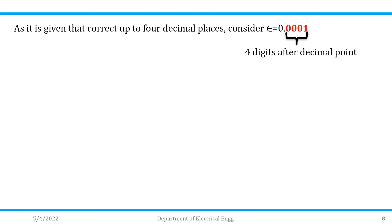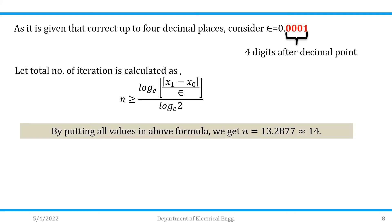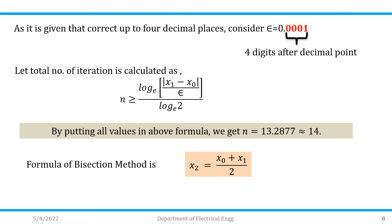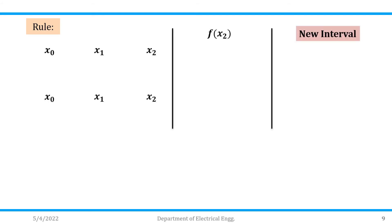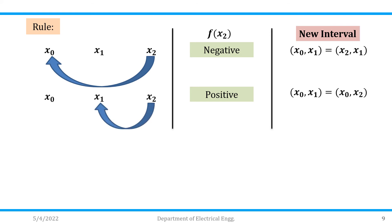Since the problem asks for correctness up to 4 decimal places, epsilon = 0.0001. Substituting all values into the iteration formula, we get approximately 13.28, meaning nearly 14 iterations are required. The bisection formula is x2 = (x0 + x1) / 2. Based on this formula and conditions, we will prepare a table.